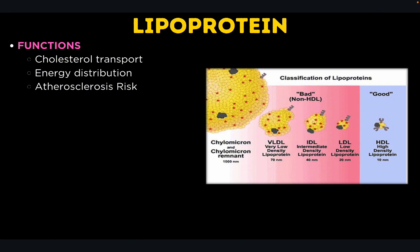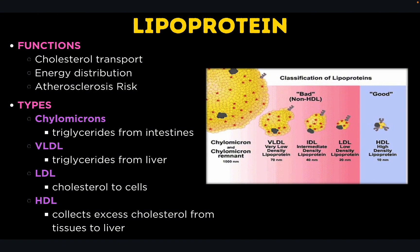For their functions, lipoproteins are responsible for cholesterol transport and energy distribution. Lipoproteins like VLDL distribute triglycerides from the diet and liver to muscle and adipose tissue for energy storage or immediate use. An imbalance in lipoprotein levels, particularly LDL and HDL, can lead to health risks such as atherosclerosis, where plaque builds up in arteries, leading to heart disease and stroke. The types include chylomicrons, which transport dietary triglycerides from the intestines to other tissues, as well as VLDL, LDL, and HDL.